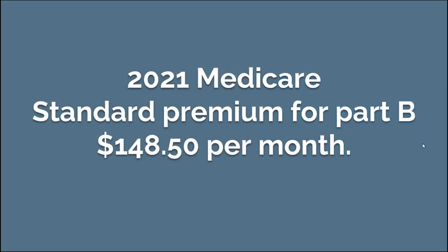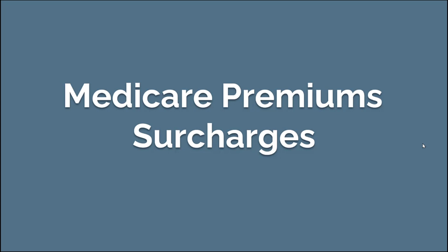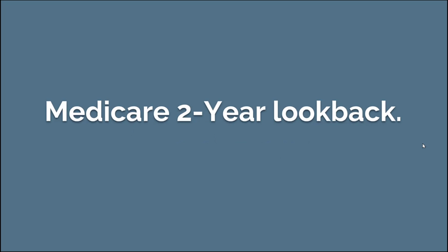In 2021, the standard premium for Medicare Part B is $148.50 per month per person. And so if you're married, obviously it would be two times that for your household. Medicare premium surcharges are going to be on top of that base premium for Medicare Part B.